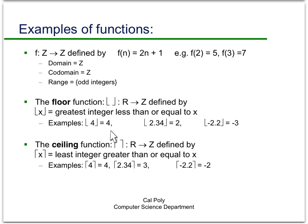So for instance the floor of 4 is 4. The floor of 2.34 is just 2. In other words you just take the integer part. And the floor of minus 2.2 is minus 3. Again you drop down to the first integer that you hit that's less than it.